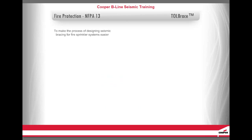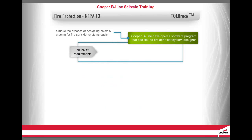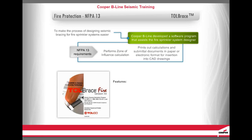To make the process of designing seismic bracing for fire sprinkler systems easier, Cooper B-Line developed a software program that assists the fire sprinkler system designer with NFPA 13 requirements, performs the Zone of Influence calculation, and prints out calculations and submittal documents, either in paper format or electronic format for insertion into CAD drawings. Let's look at some of its features.